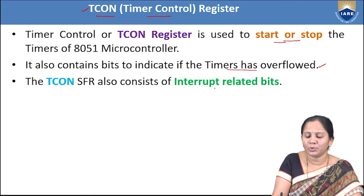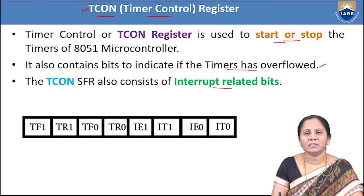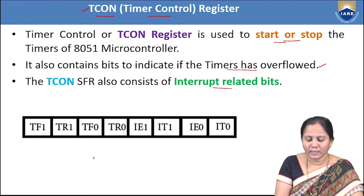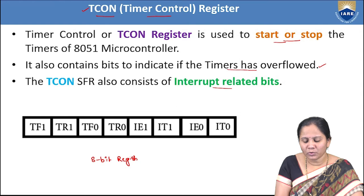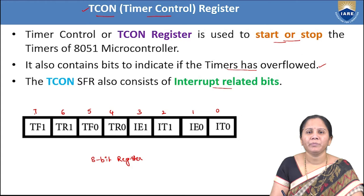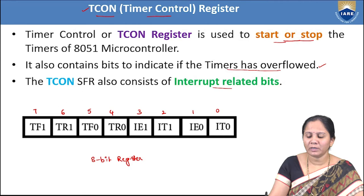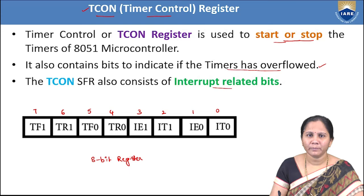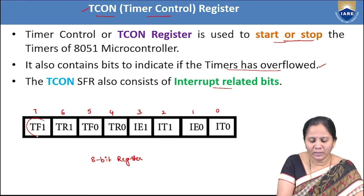The TCON register is an 8-bit register with bits 0 through 7. The two bits that indicate whether a timer has overflowed are TF1 and TF0, where 0 refers to Timer 0 and 1 refers to Timer 1. These bits indicate whether Timer 0 or Timer 1 has overflowed.